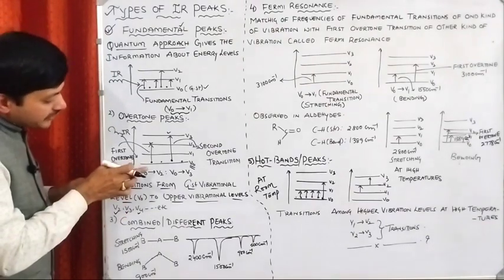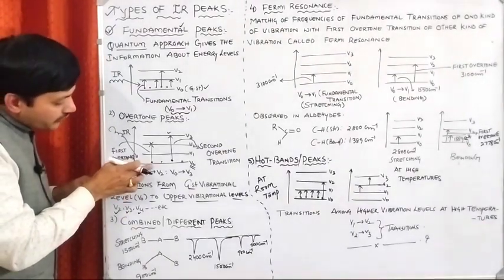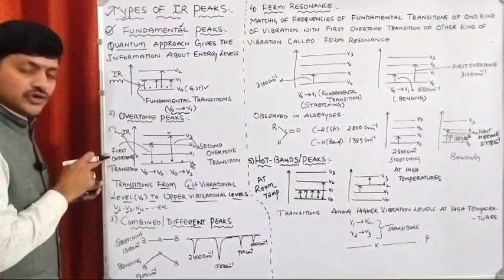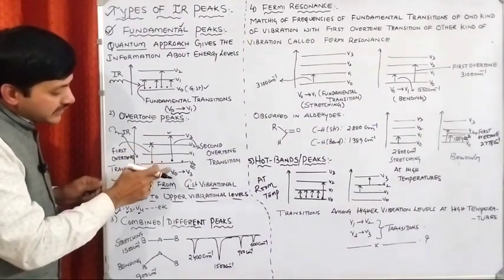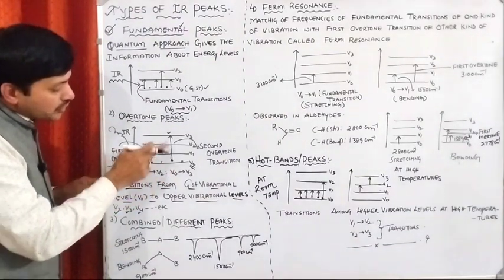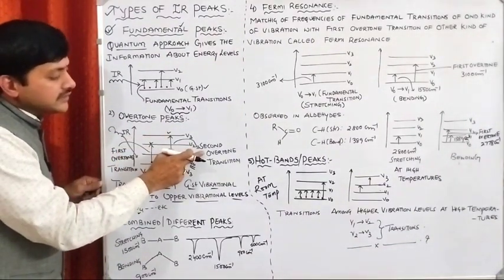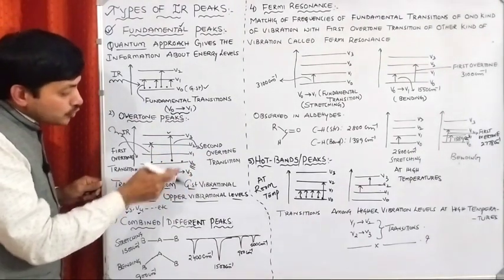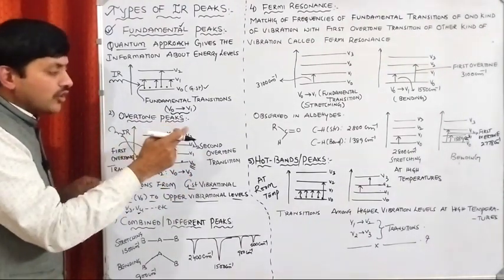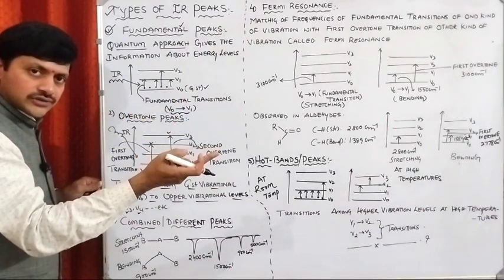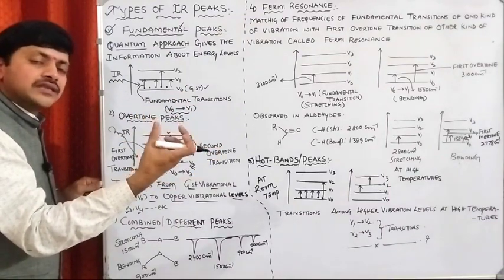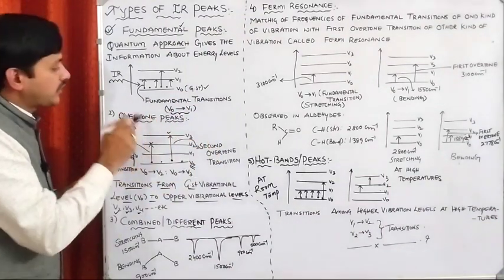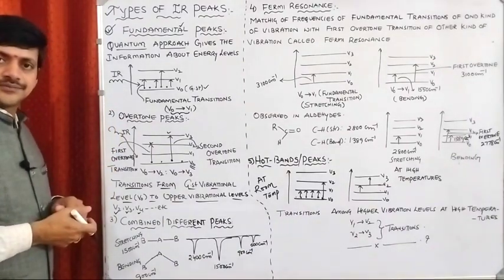The first overtone is V0 to V2, the second overtone is V0 to V3, and the third overtone is V0 to V4. The peaks resulting from these transitions are commonly called overtone peaks.